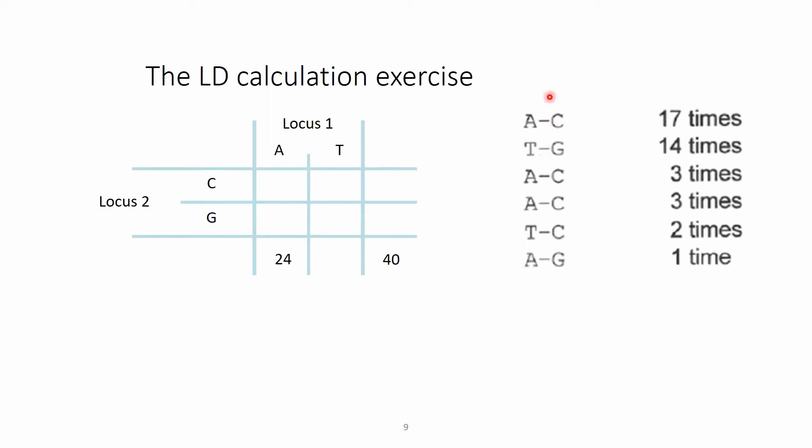Following the same logic for locus 2, in this case we count the C allele. So here we have a C, so we count this. Here we have a G, so we don't count this. Count this, this, and this, everywhere where there is a C. So there is 17 plus 3 plus 3 plus 2, and that is together 25.